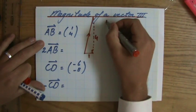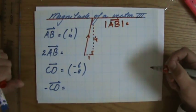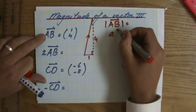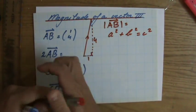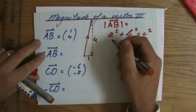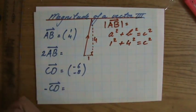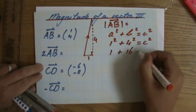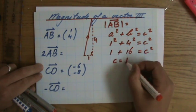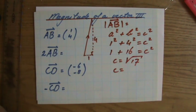So to calculate the magnitude of AB, usually notated in two vertical lines, it is a squared plus b squared equals c squared. Please make sure you have seen my previous videos where I explain this in more detail. So in this case, it's 1 squared plus 4 squared equals c squared, that is 1 plus 16 equals c squared, so c is the square root of 17, and that correct to three significant figures is 4.12.